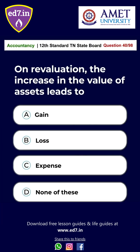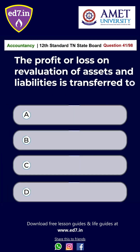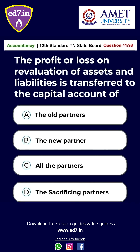Question number 40: On revaluation, the increase in value of assets leads to — Option A: gain, Option B: loss, Option C: expense, Option D: none of these. The answer is Option A, gain.